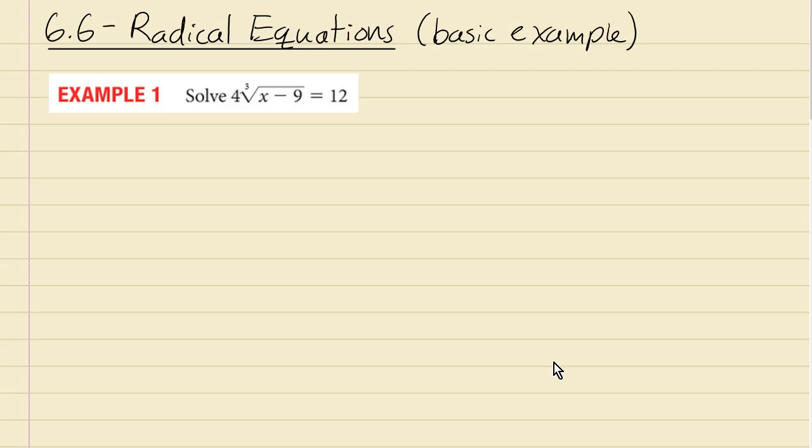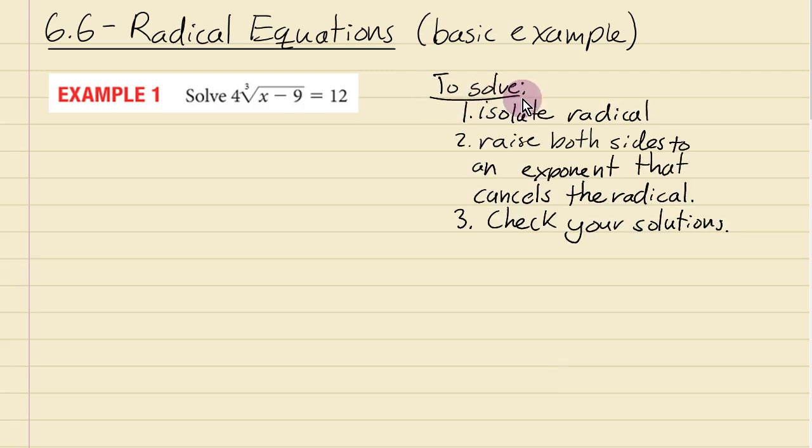Here's how: start by isolating the radical, meaning get this cube root by itself on one side of the equations. Then we'll raise both sides to an exponent that will cancel out the radical. In this case, because it's a cube root, we can use the exponent 3.